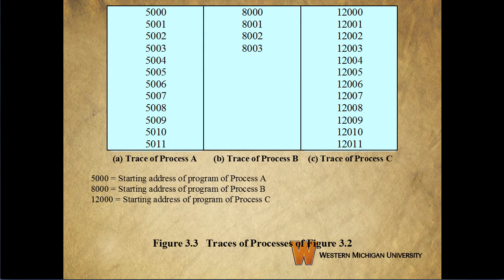Here is that process trace example. What we're looking at is just the list of instructions each process executes in the form of the memory addresses of those instructions. Process A starts at 5,000 and continues on from there. Process B starts at 8,000 and process C at 12,000. The dispatcher will be assumed to start at address 100 for the rest of this video.